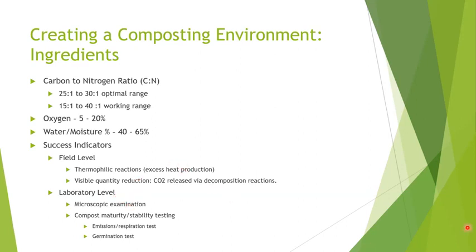Other metrics include a visible reduction in quantity, which shows that the composting process is happening and that carbon content is being released into the air as CO2. Some people take it further with microscopic examination of their compost to identify what types of microbes are present. When looking at mature compost, farmers need to be careful when applying compost that's immature — it's still changing, its nutrient levels and pH are variable and will continue to change over time.